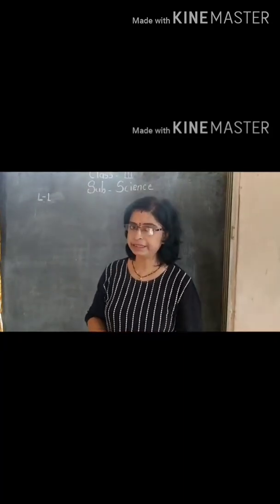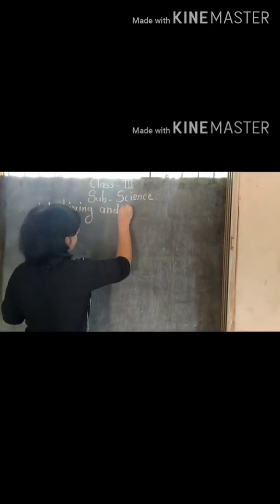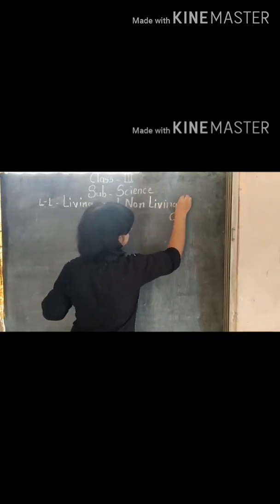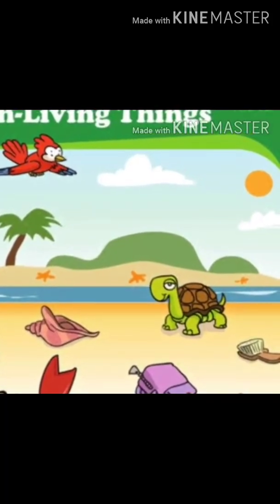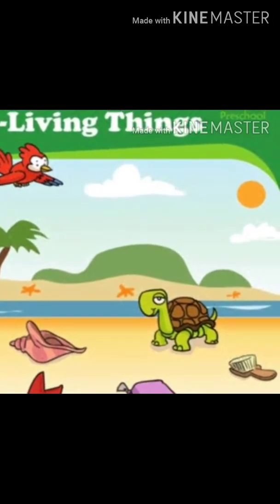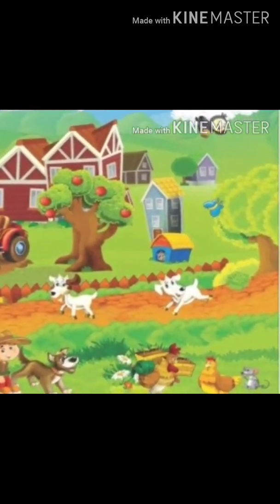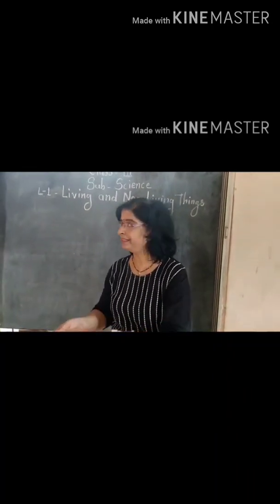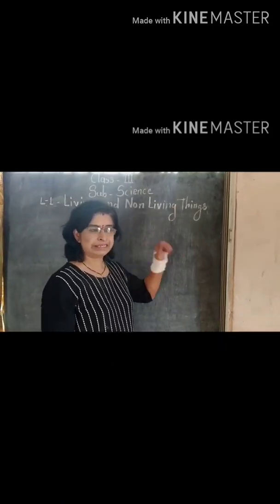Why does this happen? So today we discuss a new lesson — that is living and non-living things. Around you, you observe so many things. So what are the characteristics of these living things, and what are the characteristics of non-living things? That we discuss in a scientific way.